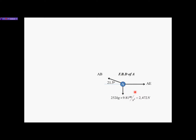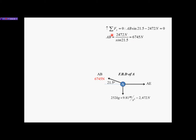Now let's choose which equilibrium equation to use first at joint A. To get a number for the unknown forces, you have to start with a known number. So I need to start with summation of forces in the Y direction. Acting up is positive — any force acting up in the Y direction is considered positive.